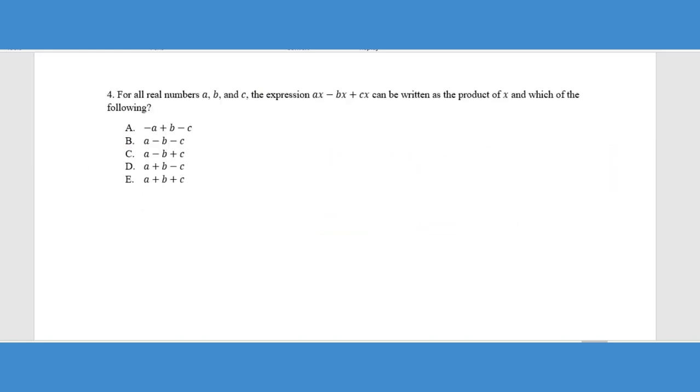All right, number four. For all real numbers A, B, and C, so it just basically tells us we're not dealing with imaginary numbers. It says the expression 8X minus BX plus CX can be written as a product of X. Again, we got a little math vocabulary going on here. Which of the following values? So basically what we're saying is if we took X and we multiplied it times one of these expressions, it would give us that expression.